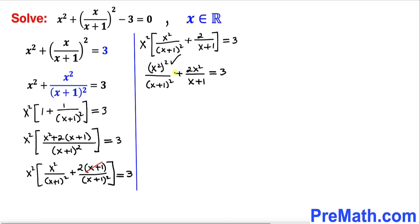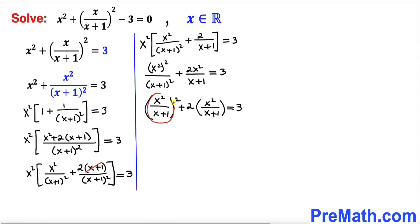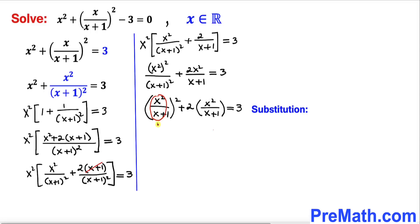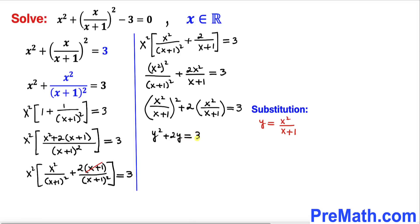The first fraction can be written as [x²/(x+1)]², plus 1. We notice that the expression x²/(x+1) appears twice and is identical in both terms. So we let y = x²/(x+1). The equation then simplifies to y² + 2y = 3.